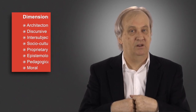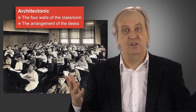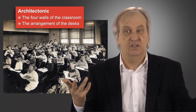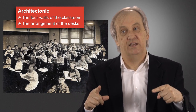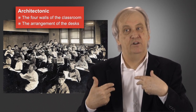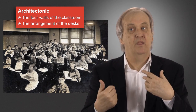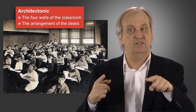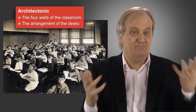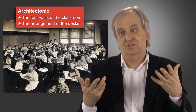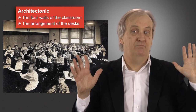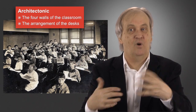The first dimension is architectonic — by which we mean the configuration of the space, the architecture of the space. Here we have kids in a classroom with four walls, but the architectonics is not just the four walls; it's the way the desks are configured. This photograph is taken from the teacher's perspective, looking down over the classroom. The room is of a size where a student at the back will be able to hear the teacher without a microphone — it's designed as a space where hearing the teacher is possible.